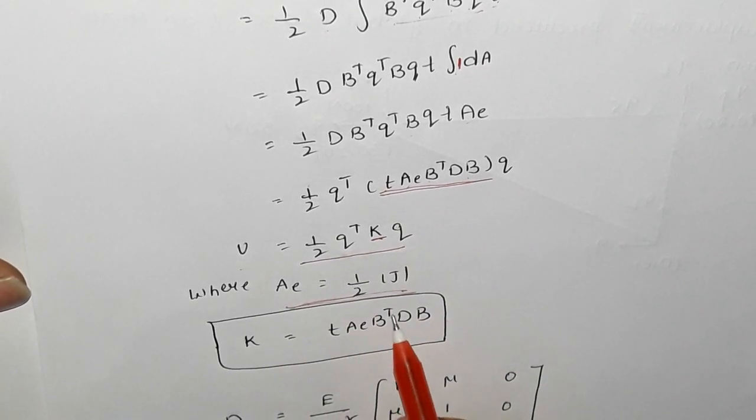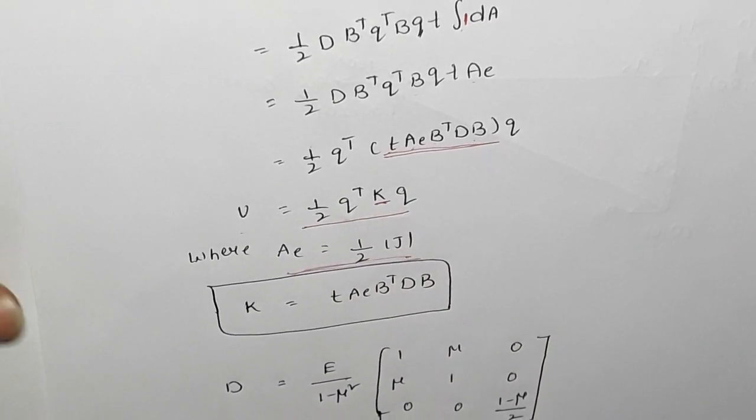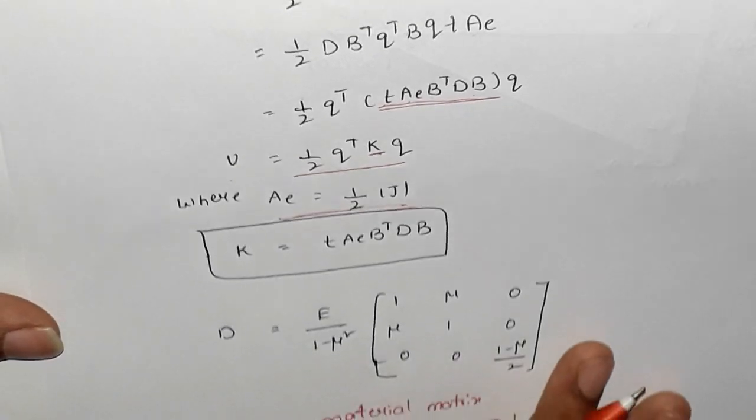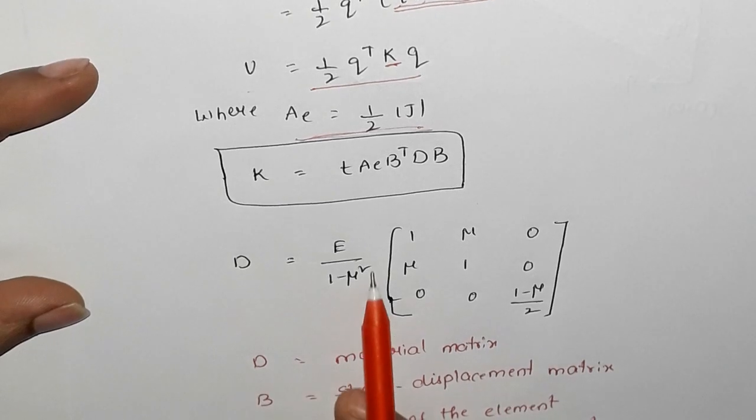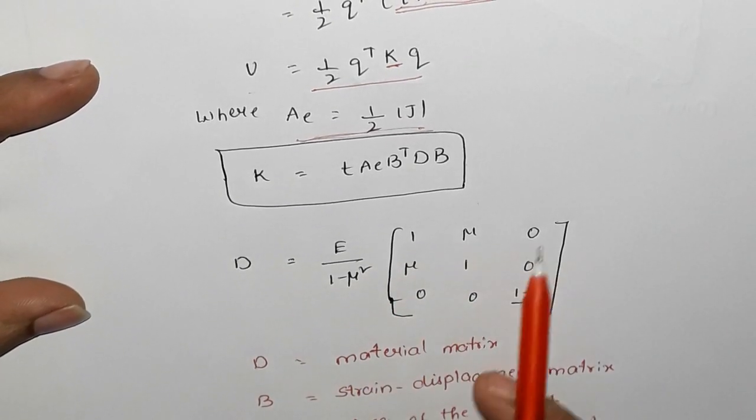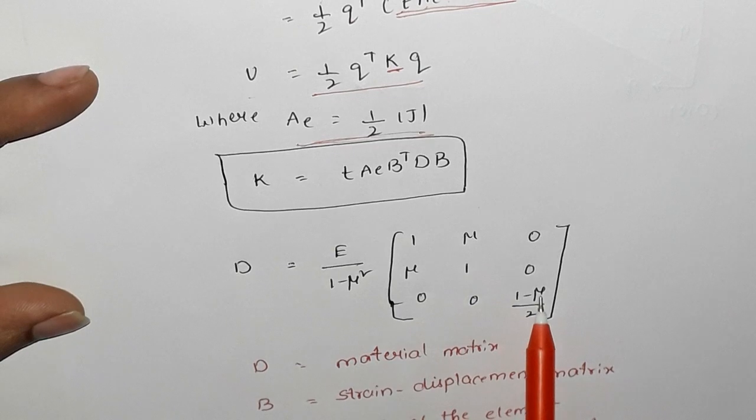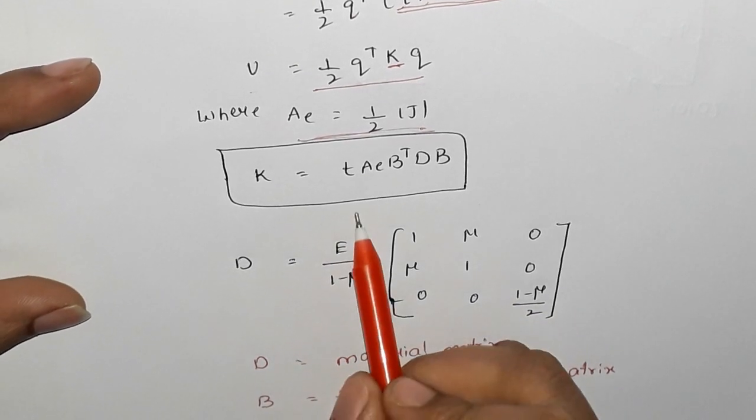Here we have plane stress condition. D is E by 1 minus mu square, 1 mu 0, mu 1 0, 0 0 1 minus mu by 2. In this case, we also have 3 max and 4 max.